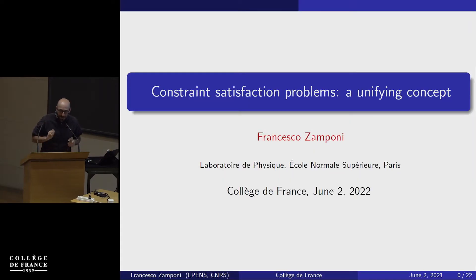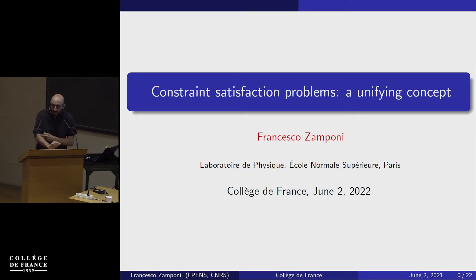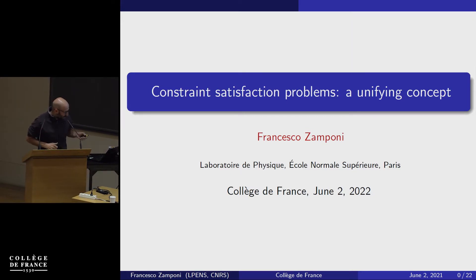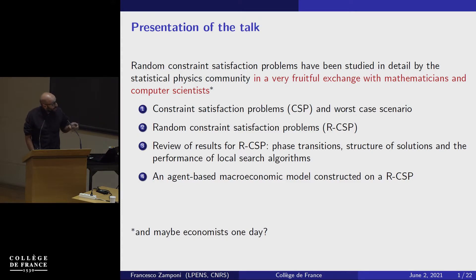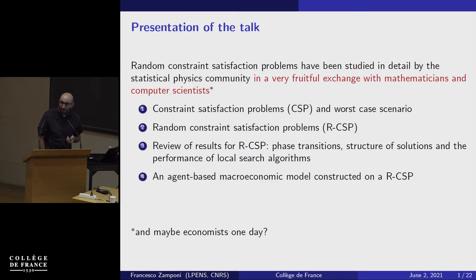I would like to start by thanking Jean-Philippe for the invitation. It's really nice to be here and be able to speak at this event. Jean-Philippe asked me to talk about constraint satisfaction problems, and in particular random constraint satisfaction problems. This is a class of problems that has been studied a lot in the statistical physics community, to which I belong, but also in mathematics and in computer science.